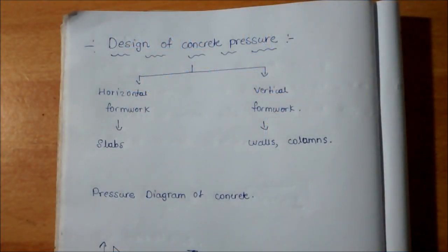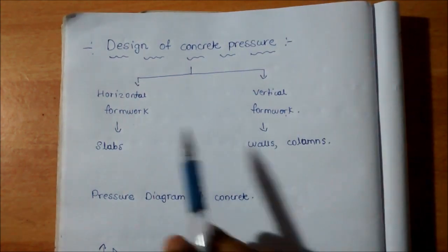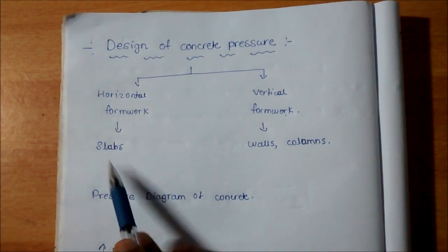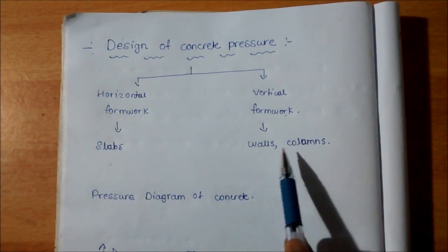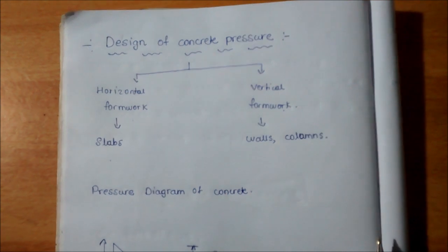Hello guys, welcome to Civil Mania. Today we will discuss the design of concrete pressure for formwork. There are two types of formwork: horizontal formwork and vertical formwork. In horizontal formwork, it comes around slabs, and vertical forms have walls and columns.